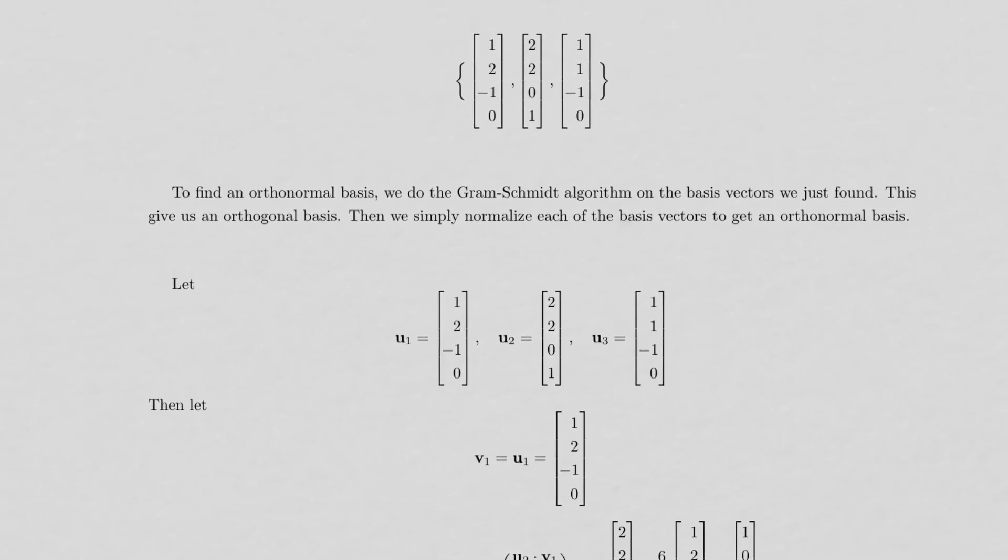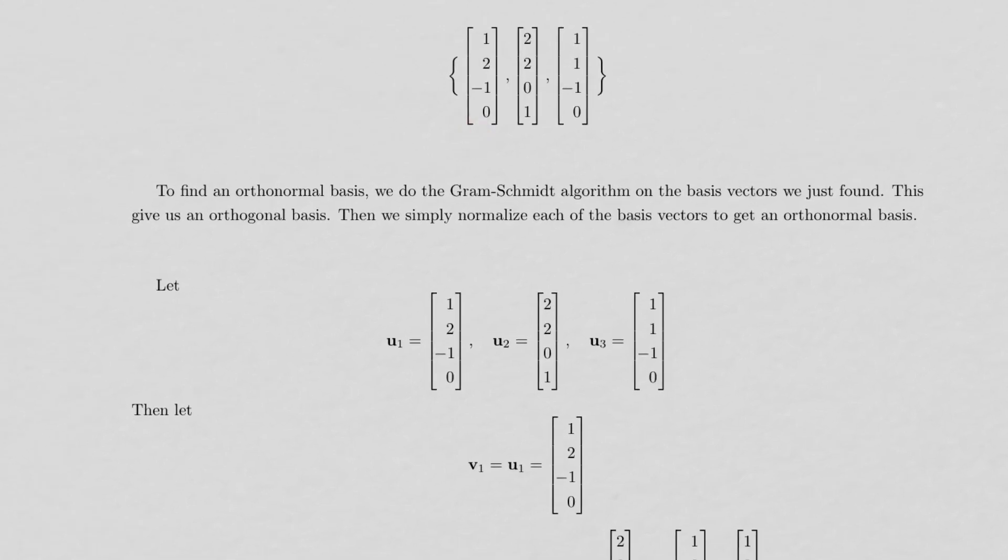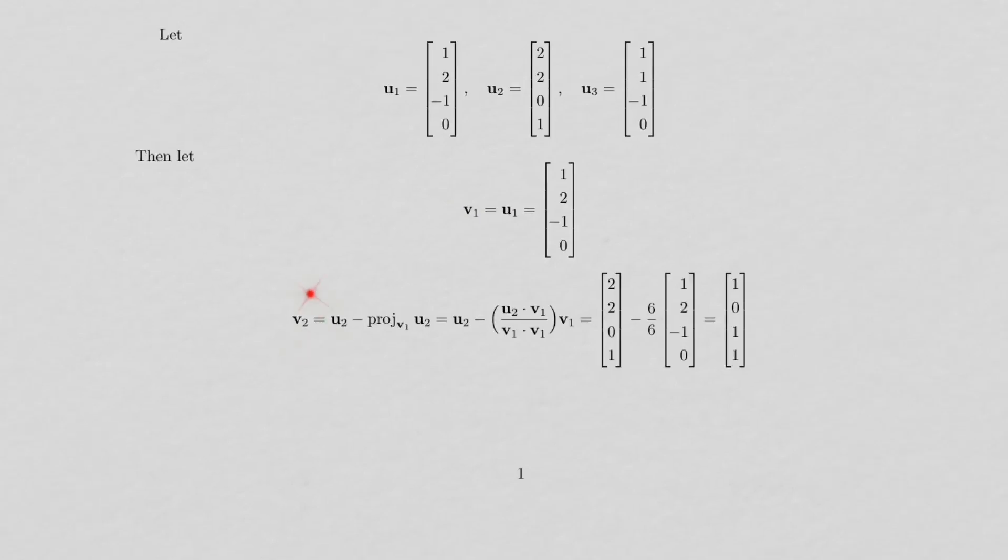So we can start by just calling these vectors u1, u2, u3, as I've got down here. And then we get the first one for free. In other words, we'll just let v1 equal u1. And then to get v2,